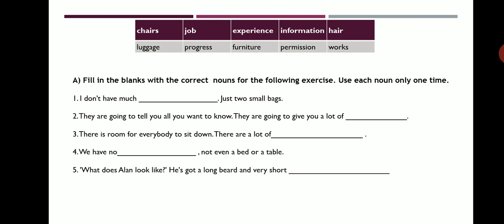Second: 'They are going to give you a lot of dash.' The correct answer is information. Third: 'There is room for everybody to sit down. There are a lot of dash.' The answer is chairs. Fourth: 'We have no dash, not even a bed or a table.' The answer is furniture. Fifth: 'He has got long beard and a very short dash.' The answer is hair.